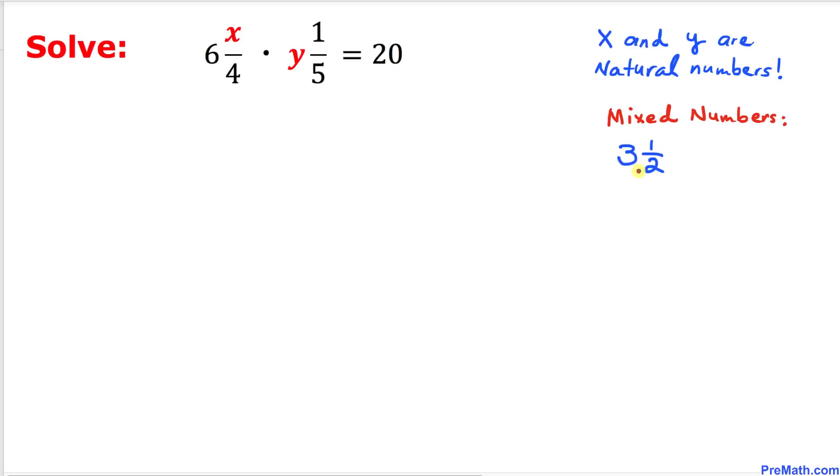Now let's go ahead and convert this mixed number into an improper fraction. Here's the very first thing we do: we multiply this 2 times 3, and then we add 1 to this number. As you can see over here, we multiply 3 times 2 and then added 1 to it, and then divided by this denominator 2.